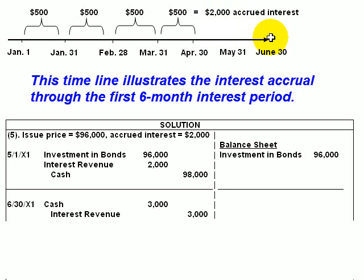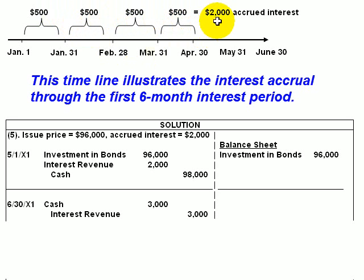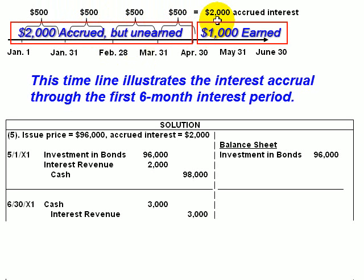If we're paying $3,000 every six months, then interest is accruing at the rate of $500 per month. And in the four months leading up to the issuance of the bonds, $2,000 of interest would have accrued. Our bondholders, though, should only receive interest for May and for June. And at $500 a month, that would be $1,000.